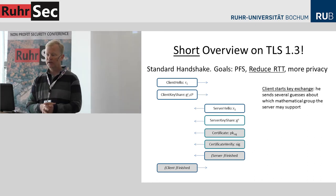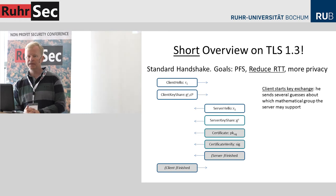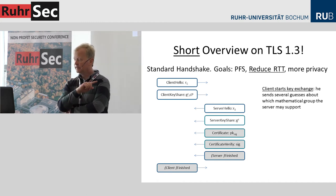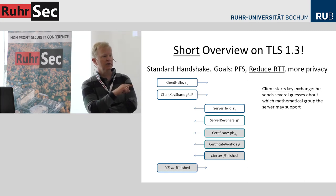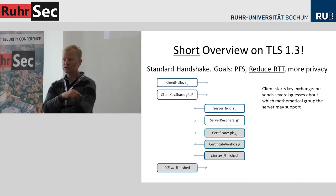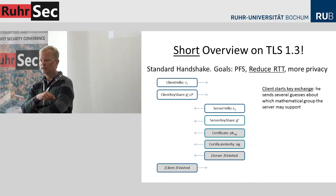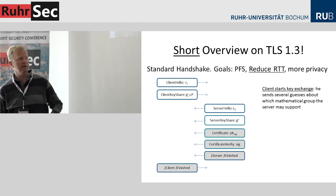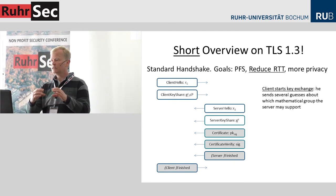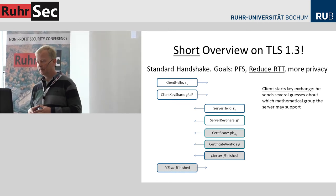To reduce round-trip time, the client must start the key exchange. This comes with complications: in the old version they had one exchange to agree on all cryptographic parameters. If the client now starts the key exchange, he doesn't know which mathematical group the server will use, so he has to make guesses. He may include several key shares in his client key share message — for example, a prime-order group and an elliptic curve group — and the server can select one. This saves 0.5 round-trip times.